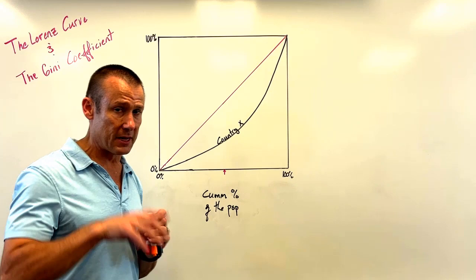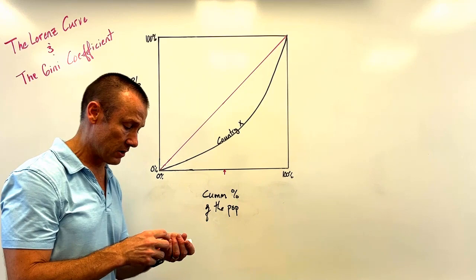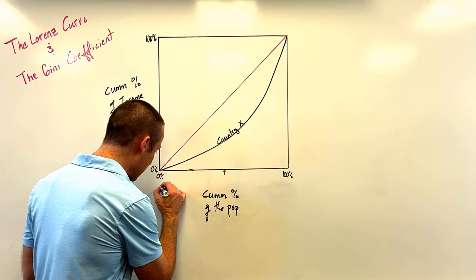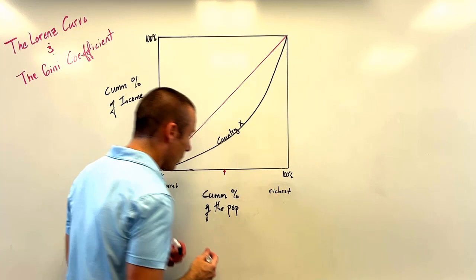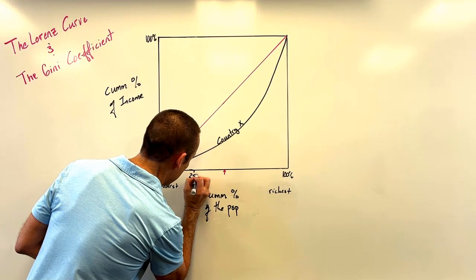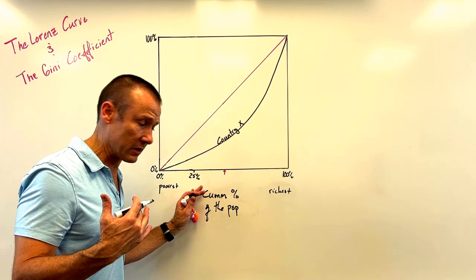One really important thing to understand about the horizontal axis is that we're going from the poorest to the richest people. So when we mark 25 percent on that axis, we're talking about the 25 poorest percent of the population.